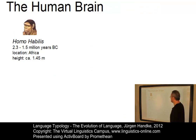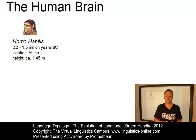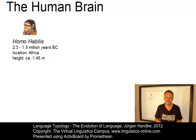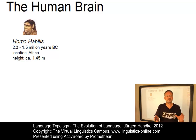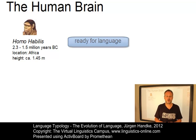The investigation of hominid skulls has shown that as early as Homo habilis, who was around from 2.3 million years before Christ onwards, all these centers were relatively well developed. Thus, the brain of Homo habilis was ready for the cognitive foundations of some sort of language.